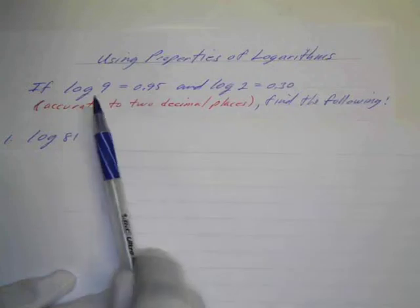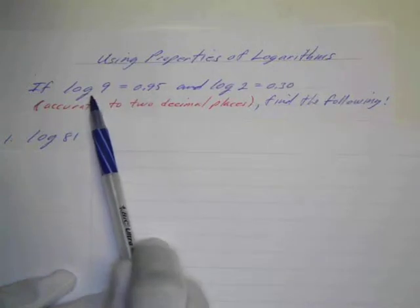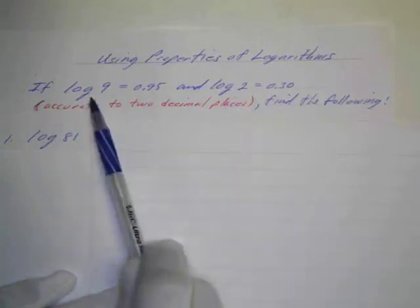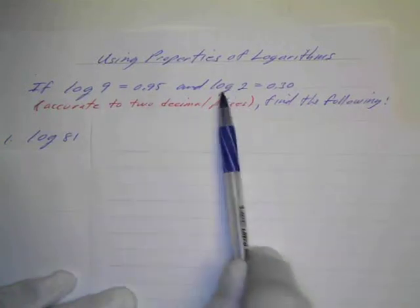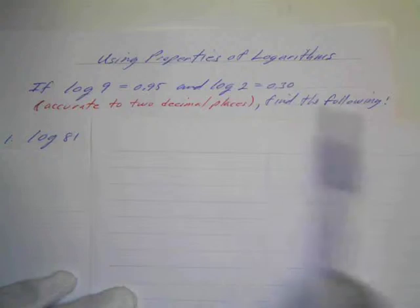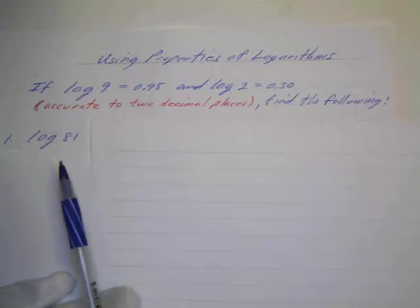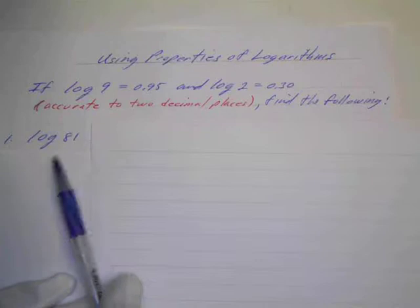So again this means log to the base 10, I just didn't want to write the little tens. So this is log to the base 10 of 9 equals 0.95 and log to the base 10 of 2 equals 0.30. We want to find the following, so the first one is the log to the base 10 of 81.